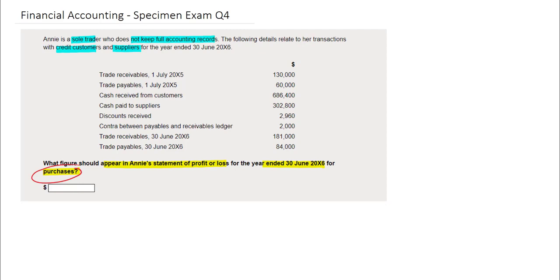This means that some of the information provided will not be relevant for us in calculating the purchases figure. We're simply interested in the information relating to suppliers.